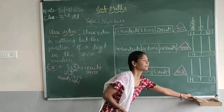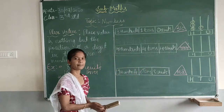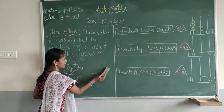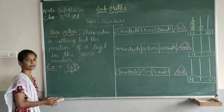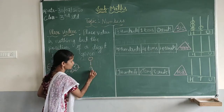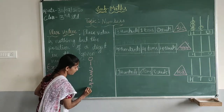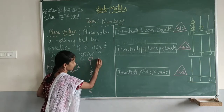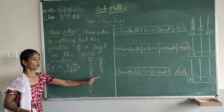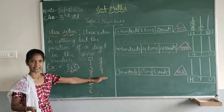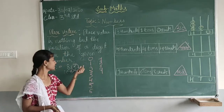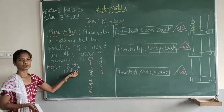For example, 1-digit numbers are always in the units place. From 0 to 9 — that is 0, 1, 2, 3, 4, 5, 6, 7, 8, and 9 — these are the single-digit numbers. These numbers are placed at the units place.